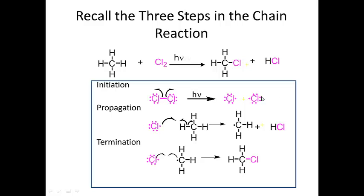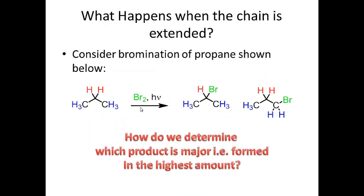In propagation, the initiator formed comes into the propagation step and abstracts a hydrogen from methane to give a methyl radical and HCl. In termination, those radicals combine to give the products. We've already discussed this in the previous radicals video. The question is: what happens when the chain is extended?